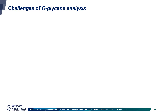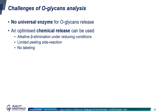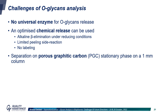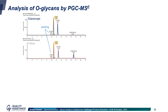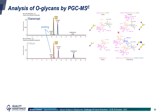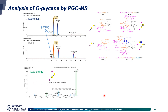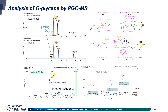For O-glycans, the approach is much more complex. First of all, there is no enzyme that is universal for O-glycan release. Chemical release can be used but has to be optimized. In the example shown, we used alkaline beta-elimination under reducing conditions, which led to limited peeling side reactions. We did not label the glycans and separated them on a PGC column, with detection by MS in negative ionization mode. This allowed us to quantify and identify different O-glycans in etanercept and fetuin based on MS data and fragmentation data to confirm the glycan structures.